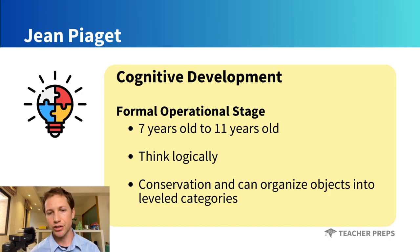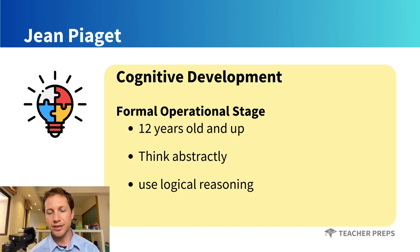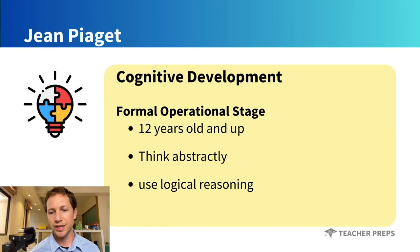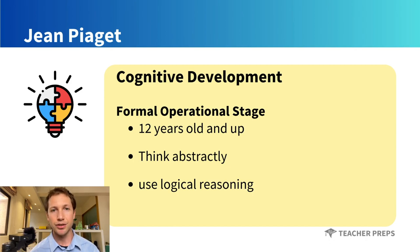Our fourth stage is the formal operational stage, which begins at the age of 12 and goes on up. Here, abstract thinking begins — such as when teens start to understand hypothetical scenarios and have the ability to use logical reasoning.